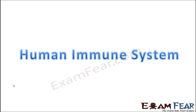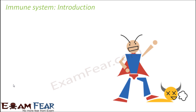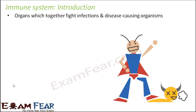Now that we have been talking about the immune system, let us discuss the human immune system. What are the different parts of our body which form the immune system? We spoke about immunity, the basic concept of immunity, what are the different types of immunity, and how immunity helps to fight infection. Now let us see what different parts of our body together comprise the immune system.